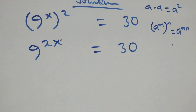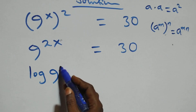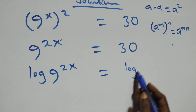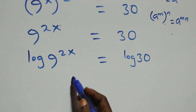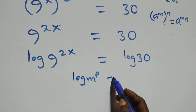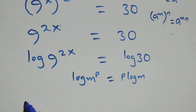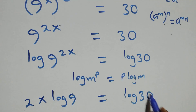We take the log on both sides: log of 9 raised to power 2x equals log 30. Then we apply the power rule of logarithm, where log of n raised to power p equals p times log n. So we get 2x times log 9 equals log 30.